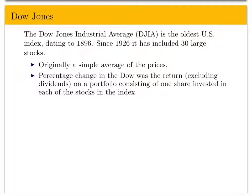The percentage change in the Dow was the return, excluding dividends — often referred to as ex-dividend — on a portfolio consisting of one share invested in each of the stocks of the index. So essentially you would form a portfolio by paying whatever price was necessary to purchase one share of each of the 30 stocks. And the percentage change over a period of time — a day, a month, or a week — was just the change in the average of the shares.